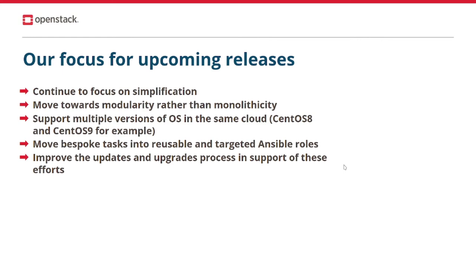Looking at our focus moving forward: in the coming releases, we aim to continue these efforts and move towards modularity rather than monolithicity. These efforts include working with multiple versions of the operating system, moving bespoke playbooks out of AAA heat templates and into targeted Ansible roles, and optimizing our updates and upgrade process in support of these goals. We want to make our framework easily consumable by other projects, such as the OSP Director Operator, which is used to deploy OpenStack from a container-native pod running in Kubernetes. We will continue working to improve the updates and upgrade process to simplify Triple O and ensure software stability across versions, including ensuring that upgrades can be done in stages while still providing a reliable experience for tenant workloads.